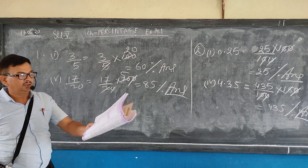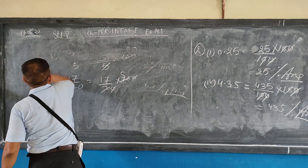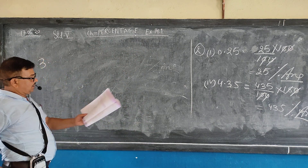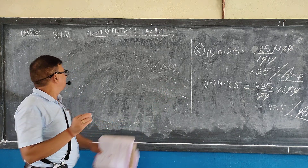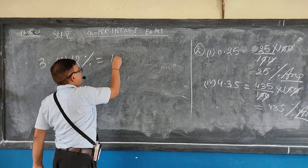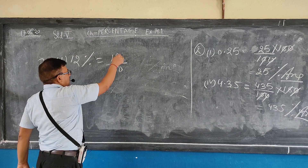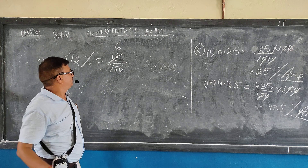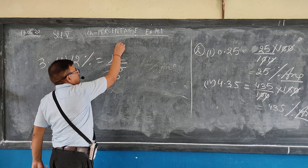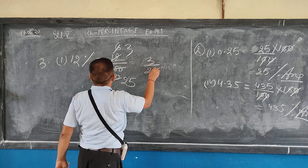Now question number 3: convert the following percent into fraction — means you have to change into fraction. First: 12 percent. To remove the percent sign, divide with 100. So 12 by 100. Both numbers are divisible by 2: 12 divided by 2 is 6, 100 divided by 2 is 50. Divide again by 2: you get 3 by 25.